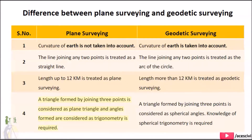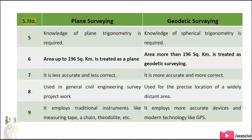4. A triangle formed by joining three points is considered a plane triangle in plane surveying, and knowledge of plane trigonometry is required. In geodetic surveying, a triangle formed by joining three points is considered a spherical triangle, and knowledge of spherical trigonometry is required. 5. Area up to 196 km² is treated as plane surveying.